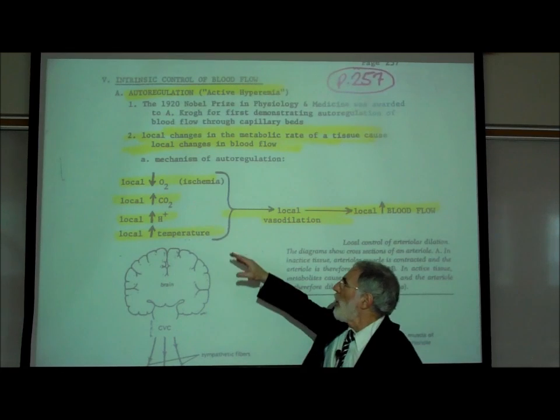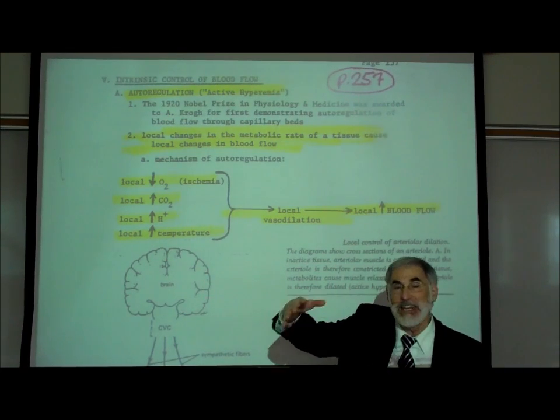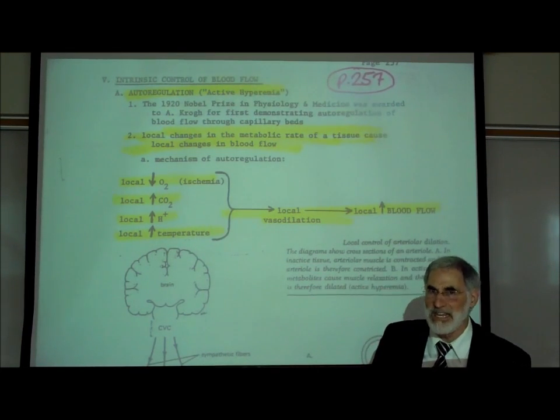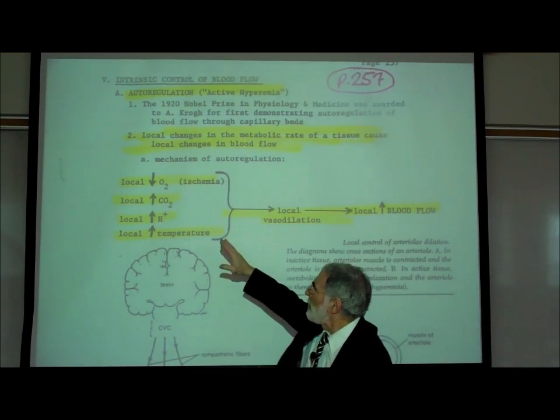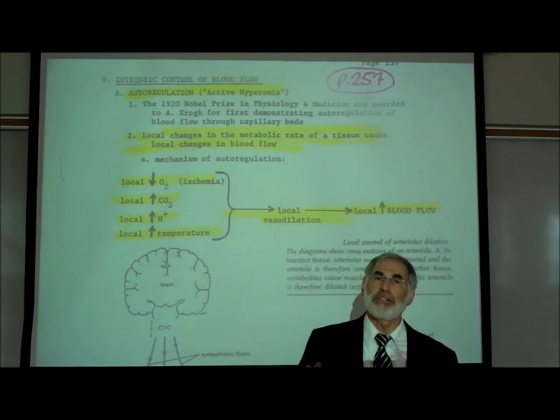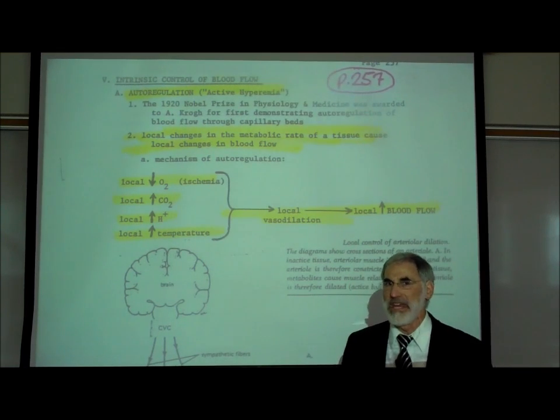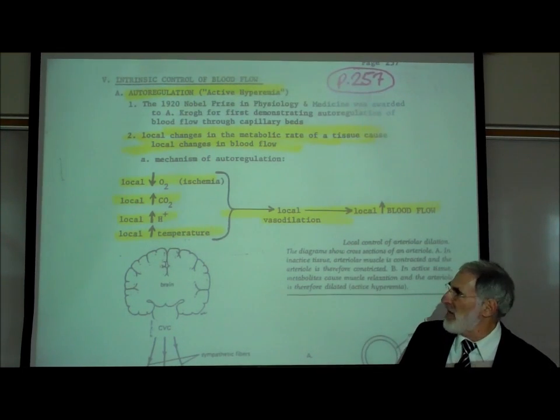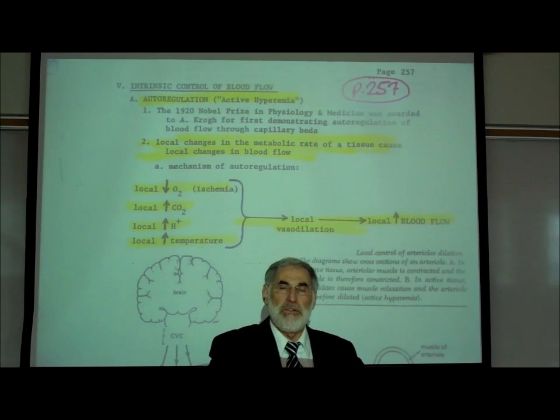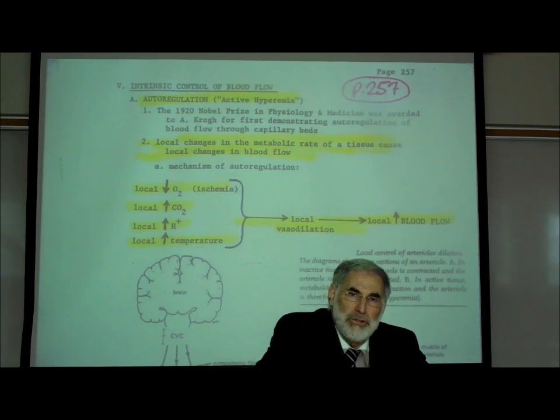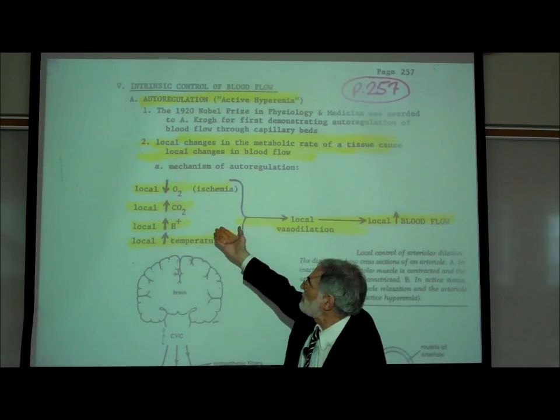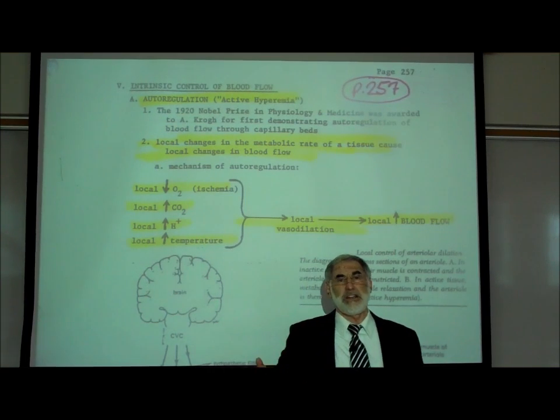Now usually, all four of these things physiologically occur simultaneously. That's because what normally causes these four changes are changes in metabolic rate and the activity level of that tissue. For example, if you start to exercise and use your skeletal muscles, that increases the rate of cellular respiration.